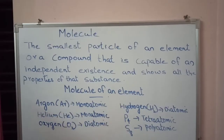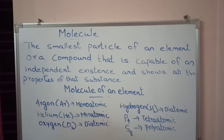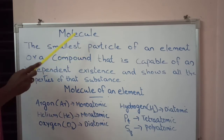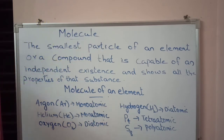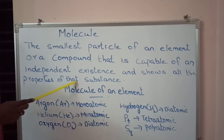Now you know what an atom is. An atom is the smallest particle of a substance or matter. Then what is a molecule? Two or more atoms combine together to form a molecule. Or it can be defined as the smallest particle of an element or a compound that is capable of independent existence and shows all the properties of that substance.